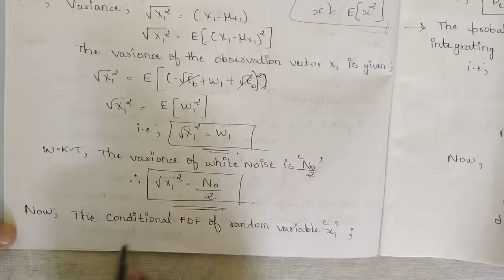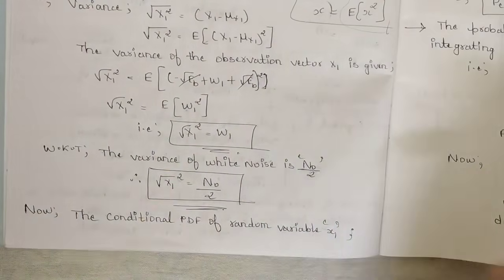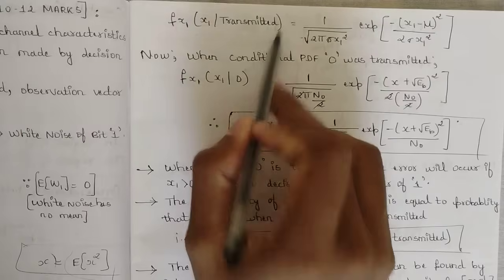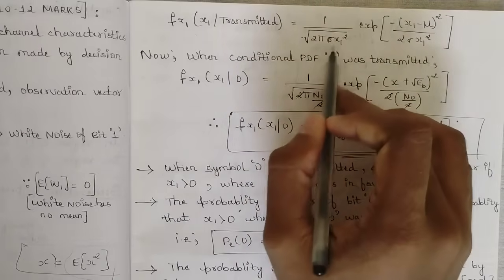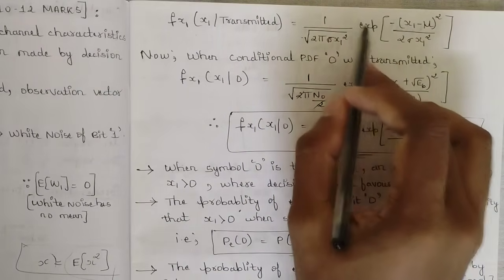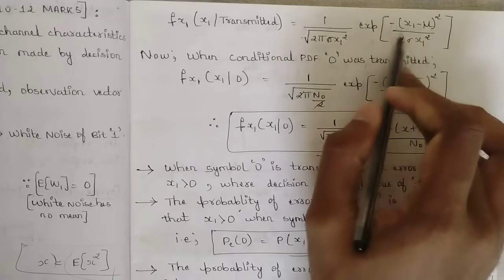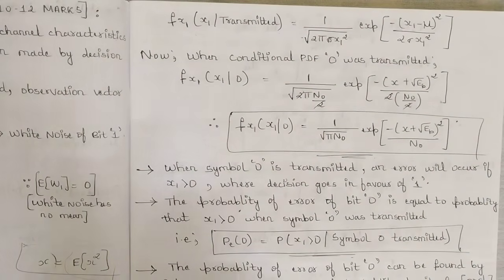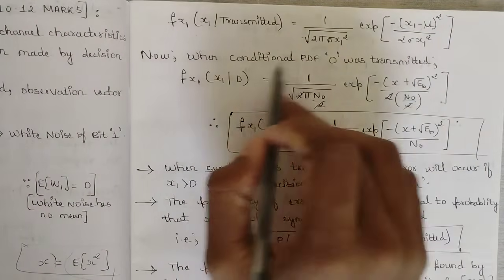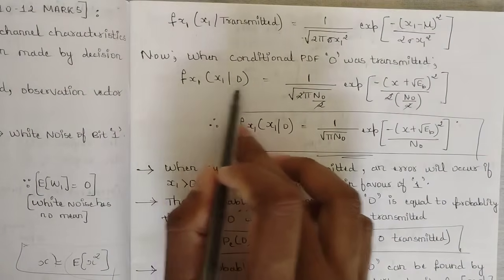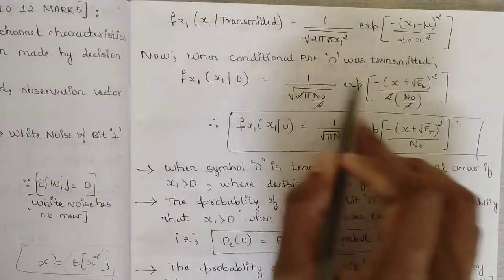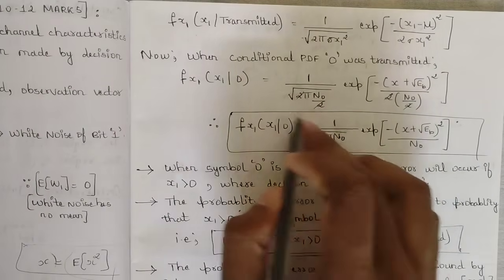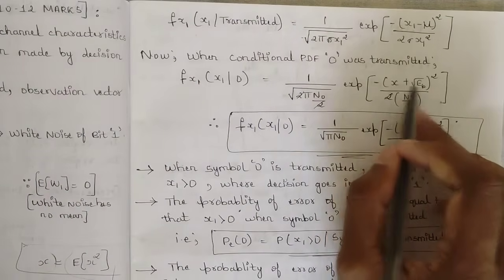The conditional PDF of random variable x1 is given by: f(x1) = (1 / √(2π σ²)) · exp(−(x1 − μ)² / (2σ²)). When bit 0 is transmitted, substituting μ = −√Eb and σ² = N0/2, the conditional PDF becomes: f(x1 | 0 transmitted) = (1 / √(2π · N0/2)) · exp(−(x + √Eb)² / N0).